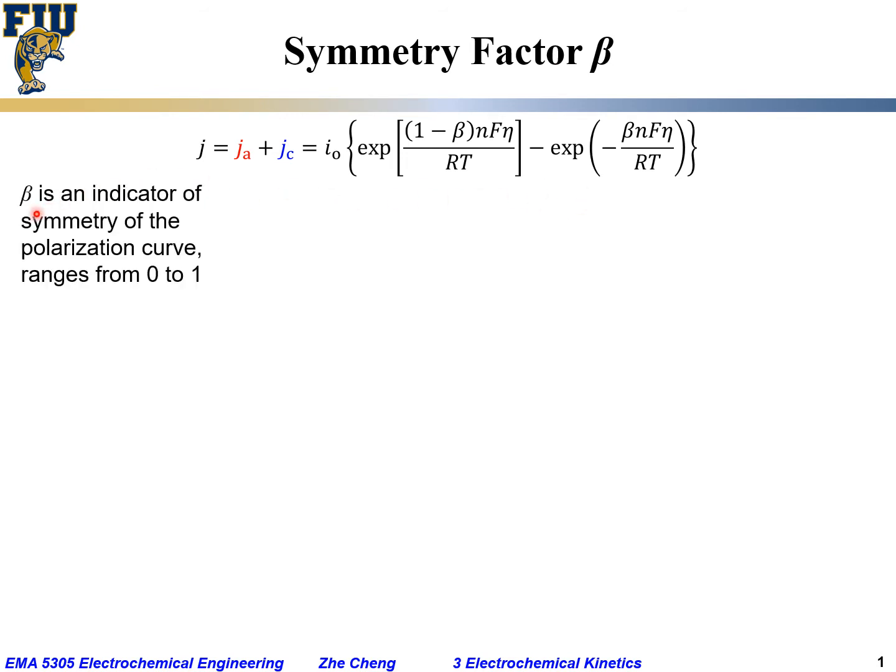We say beta is the indicator of the symmetry for the polarization curve, for the current density versus overpotential curve, and it typically ranges from 0 to 1.